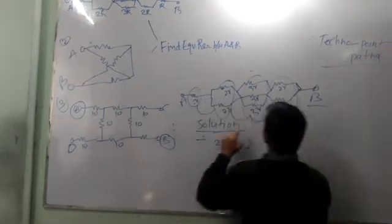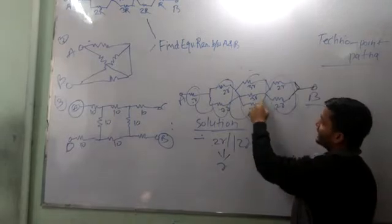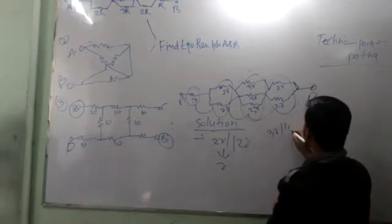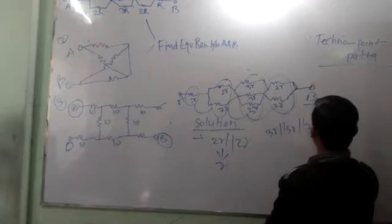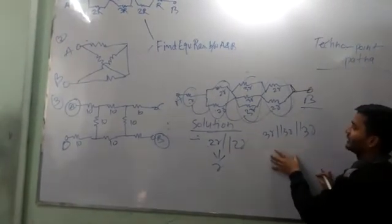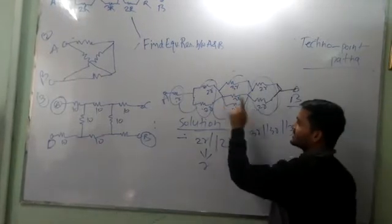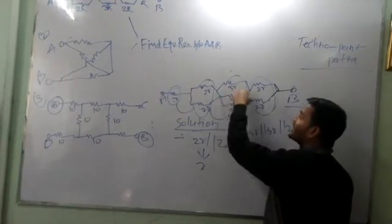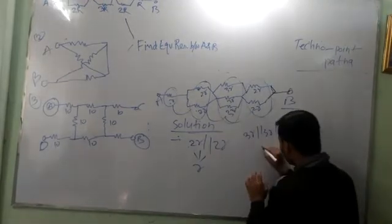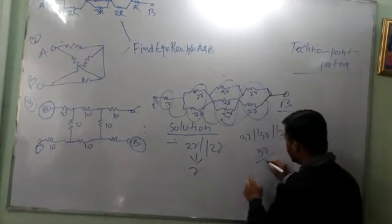You see a parallel arrangement. Two R in parallel — what happens? Three R, three R parallel. Three R parallel three R — three times parallel means three times divided.